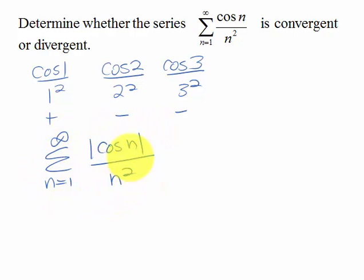Let's consider the convergence of this series, the absolute value of the terms in this series. Well, I can see that those terms are always going to be less than or equal to 1 over n squared